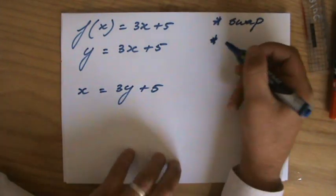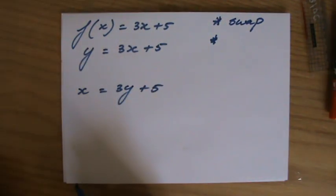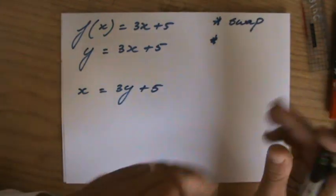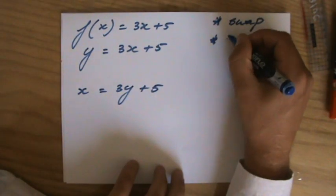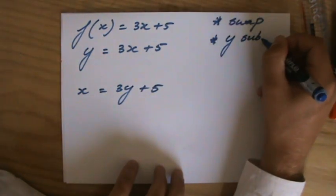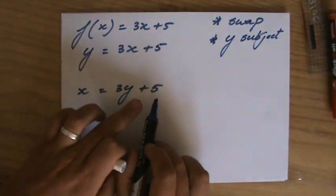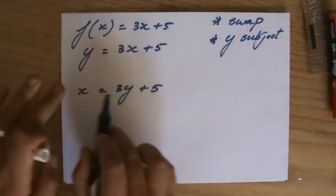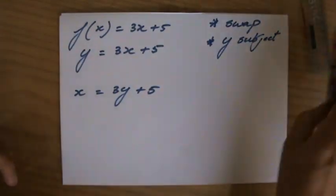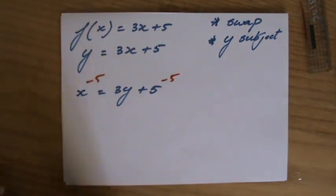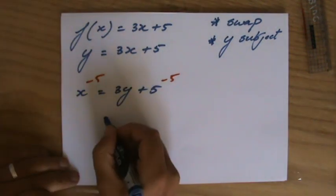And then the second thing we have to do is we have to make y the subject again, so it says y equals. Make y the subject. So how do we do that? Well first I have to move the 5 to the other side. I'm taking away the 5 here, gotta take away 5 there to make it equal.